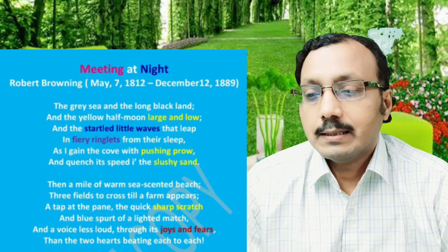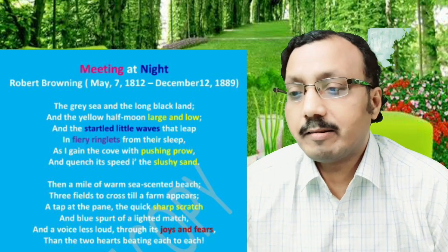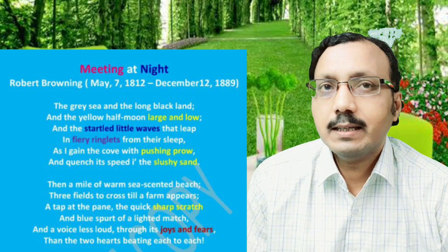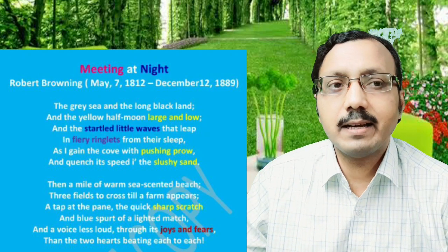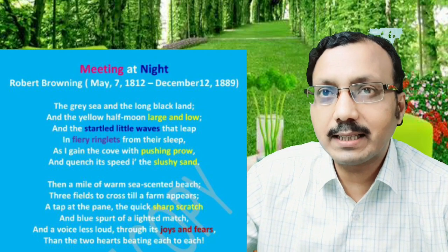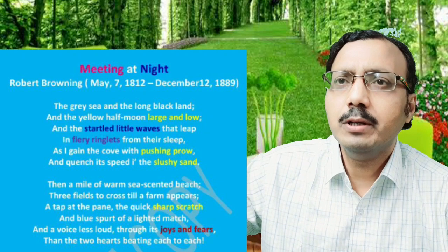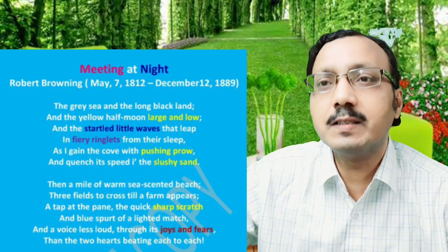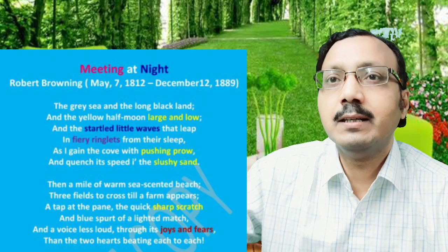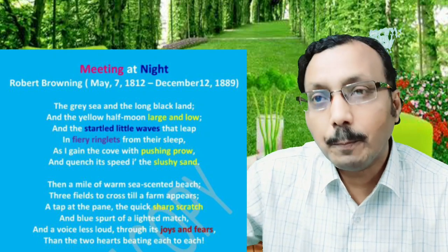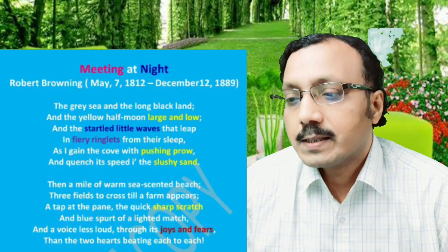The gray sea and the long black land. The color gray in the poem suggests gloominess. Gray is an intermediate color between black and white. Notice the two contrasting words black and white — this is called the juxtaposition of two contrasting or opposite words side by side. This figure of speech is called oxymoron, where we have the placement of two opposite words together.